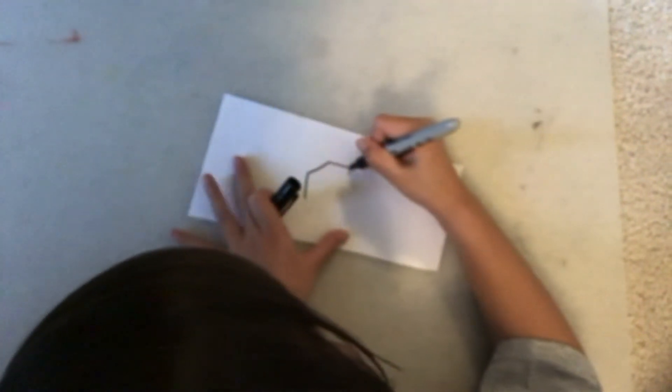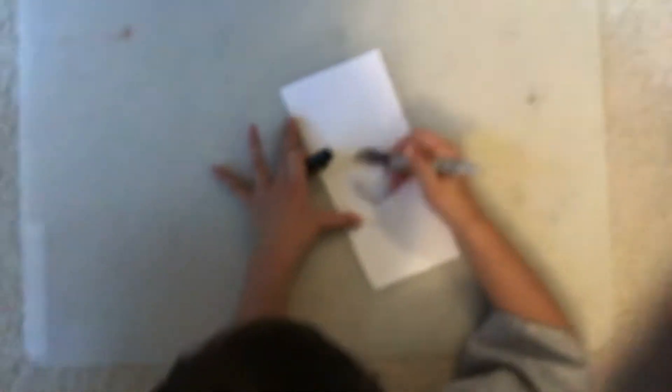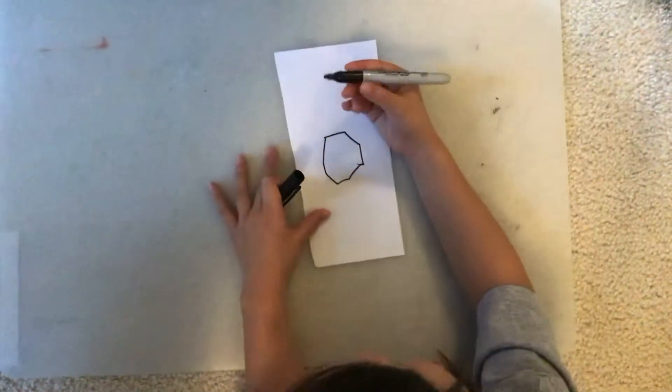Then another diagonal line, and a straight line, a diagonal line, a straight line, and there's our basic snowflake.